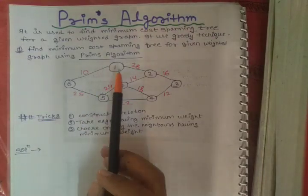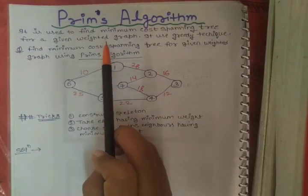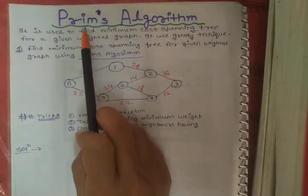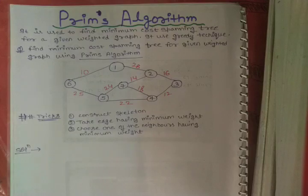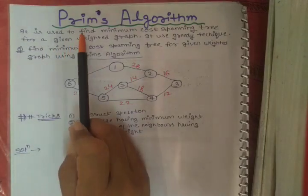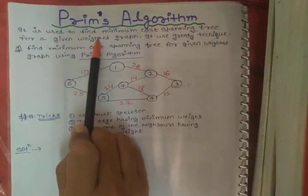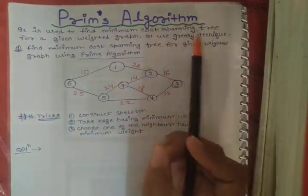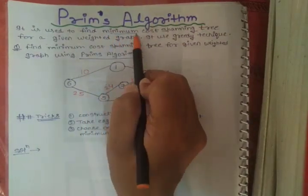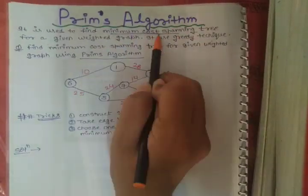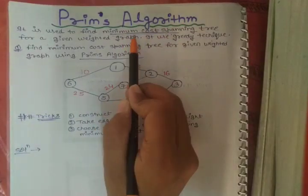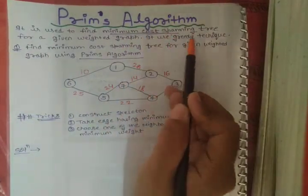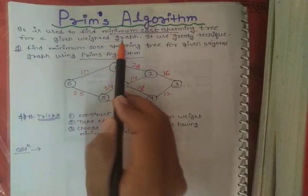In this video I will explain about numericals that can be asked related to Prim's algorithm. We will briefly discuss first about why we use Prim's algorithm. Prim's algorithm is used to find the minimum cost spanning tree. Note the keyword is minimum cost spanning tree - we not only find a minimum spanning tree but we find the minimum cost spanning tree for a given weighted graph.